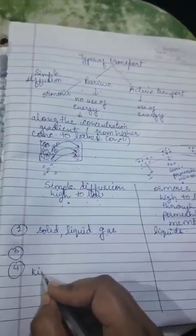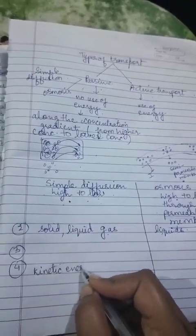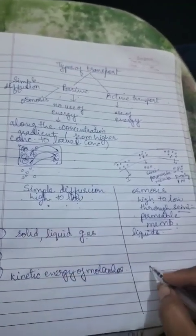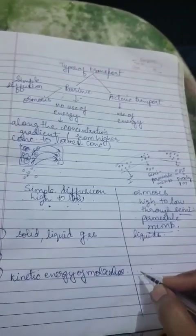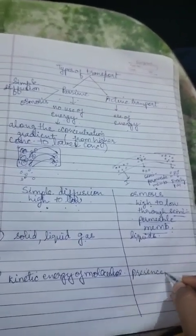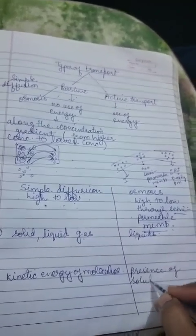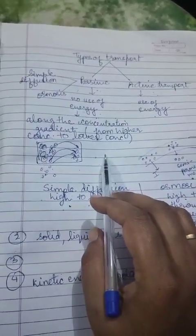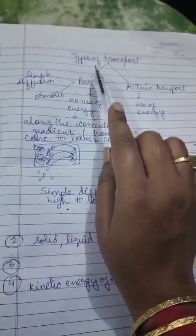Number four: simple diffusion depends on the kinetic energy of molecules — how much energy the molecules need to move from higher to lower concentration. Whereas osmosis depends on the presence of solutes, that is, salts. So, till here, what I taught you is that there are types of transport — two types: passive and active.